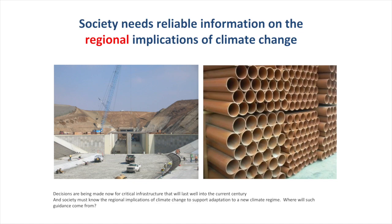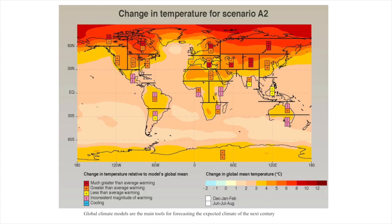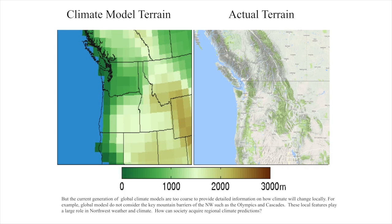Where will such guidance come from? Global climate models are the main tools for forecasting the expected climate of the next century, but the current generation of global climate models are too coarse to provide detailed information on how climate will change locally. For example, global models do not consider the key mountain barriers of the Northwest such as the Olympics and Cascades — local features that play a large role in Northwest weather and climate.